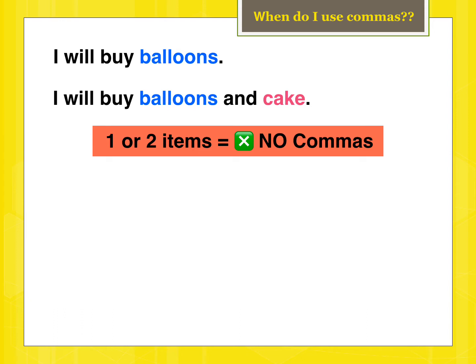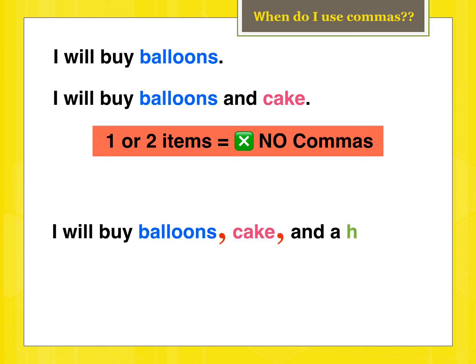Also, with the sentence 'I will buy balloons and cake,' I will buy two items, so no need for commas — it's just the word 'and' in the middle. The only time we need commas is when we have three or more items.